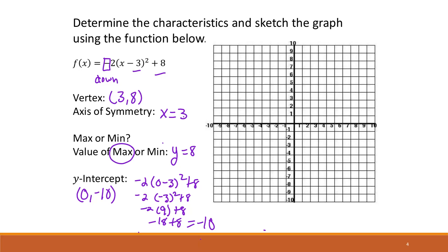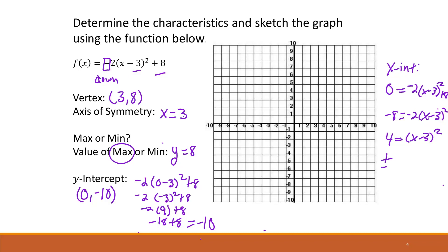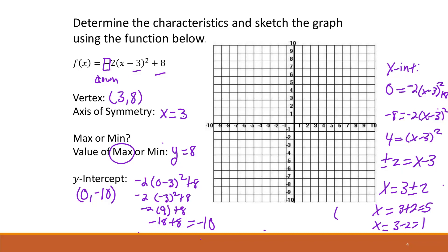Now let's find the x-intercepts. Set f(x) = 0: 0 = −2(x − 3)² + 8. Subtract 8 from both sides, divide by −2, then take the square root of both sides. This gives x = 3 ± 2, so x = 5 and x = 1. Our x-intercepts are the points (5, 0) and (1, 0).